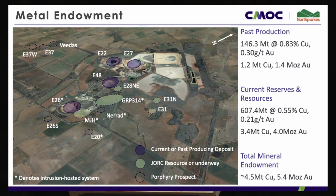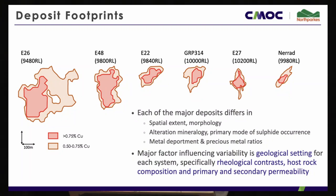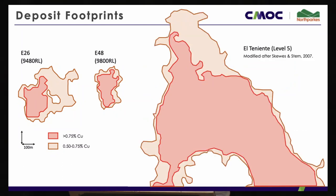The spatial context shows that each deposit has a concentric grade zonation, but the footprint differs depending on the host rock sequence and the complexity and geometry of the porphyry phases intruded. The major factor influencing variability in our systems is the host rock. We see consistency in fluid and magma chemistry — what changes is the environment the magma is placed into and how much has been fluxed in. For context, here's half of El Teniente at the same scale: we are the boutique end of the porphyry world.